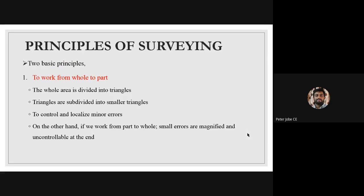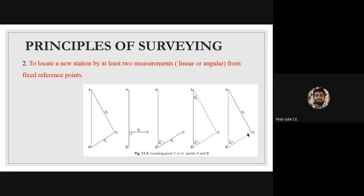So the second principle is: to locate a new point we must take at least two measurements, which can be two linear measurements, two angular measurements, or one linear and one angular measurement from any known points. The first principle is to work from whole to part rather than from part to whole, and the second principle is that at least two measurements must be taken to locate a new point.